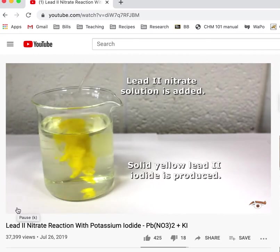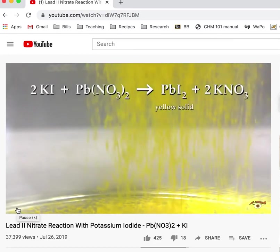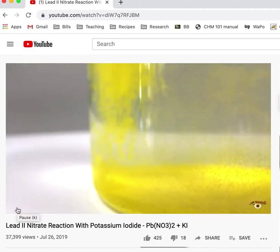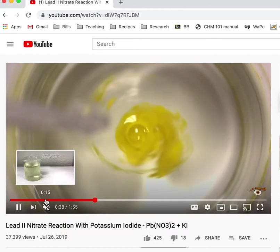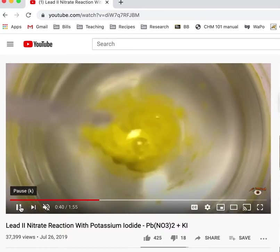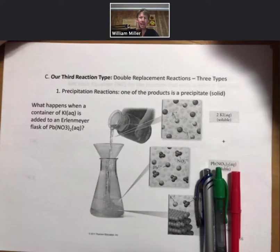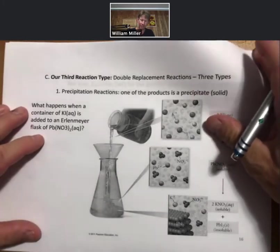You can see that lovely precipitate forming, brilliantly colored. It does appear depending upon how you add the two chemicals together to precipitate or rain down to the bottom of the beaker in this case. And so how do we understand what's happening in terms of what's going on for our class?